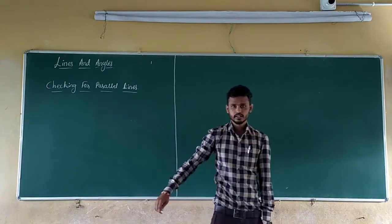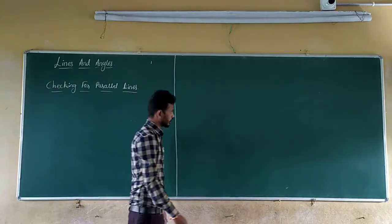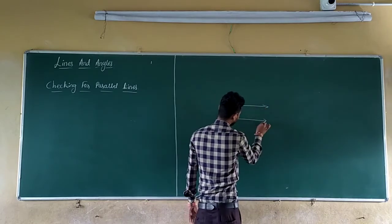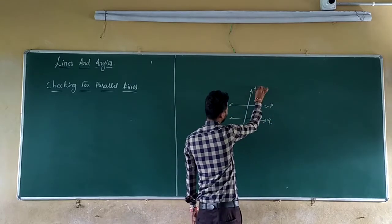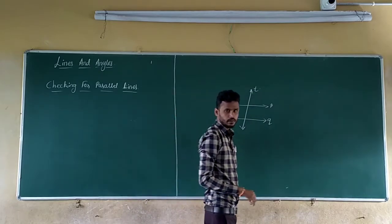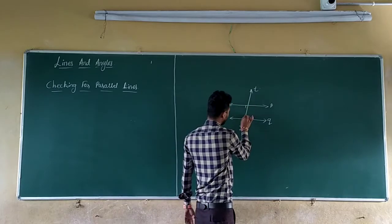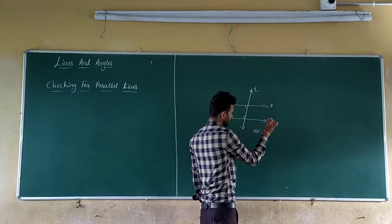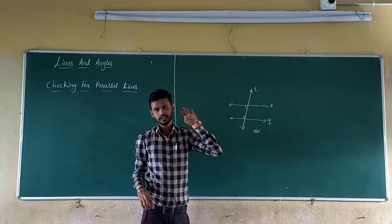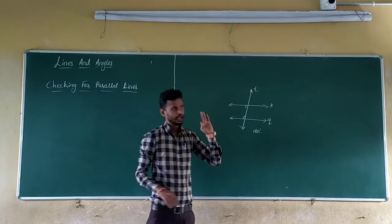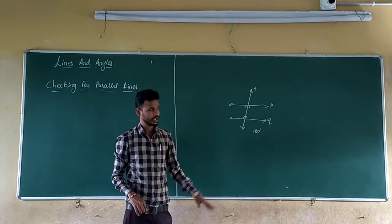You know what parallel lines are — if two lines do not meet each other at any point, those two lines are called parallel lines. If two lines are parallel and intersected by a transversal, then corresponding angles are equal, alternate interior angles are equal, and angles on the same side of the transversal are supplementary — that is, the sum of those two angles is 180 degrees. These three things you already know from the previous class.